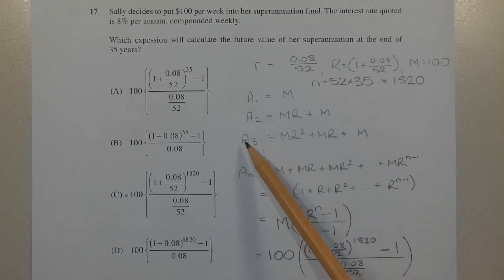Now we can generalize a pattern. AN, which represents the value of that annuity at the end of N weeks, equals M plus MR plus MR squared plus dot dot dot plus MR to the power of N minus 1. We notice it's N minus 1 because this is A3 here, yet the highest power is 2. So it's always 1 less than the subscript.